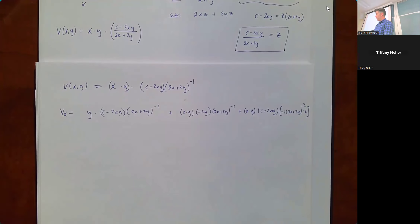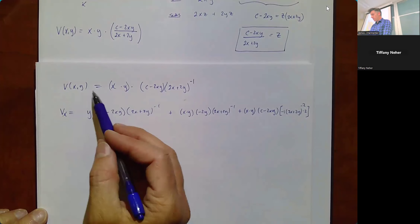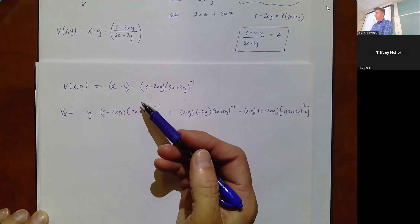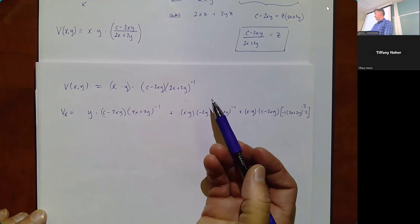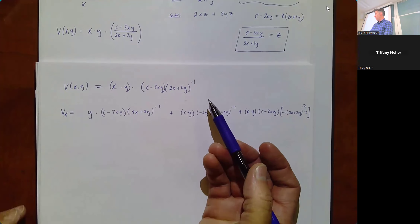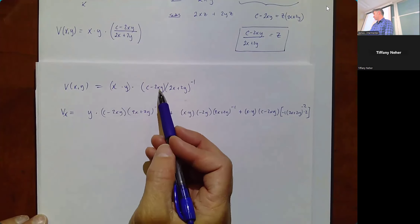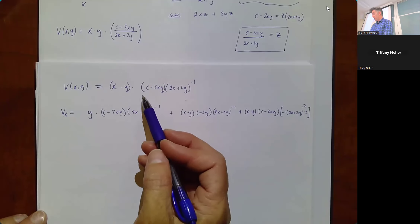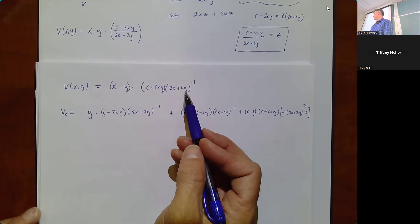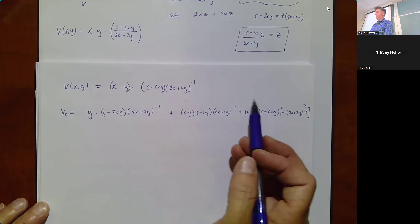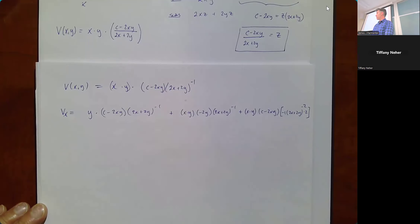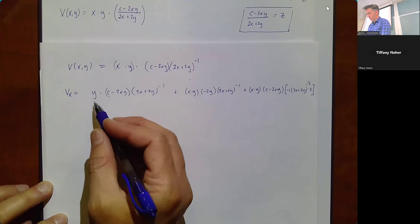We can make life easier by noting that V is symmetric in x and y, so Vx and Vy will have the same structure. Factor out y(2x + 2y)^(-2) from Vx to simplify. We'd then set Vx = 0 and Vy = 0 and solve — but we'll finish this solution separately and present it next time.